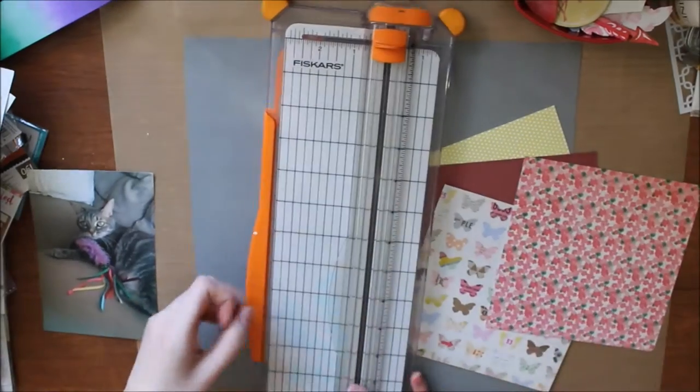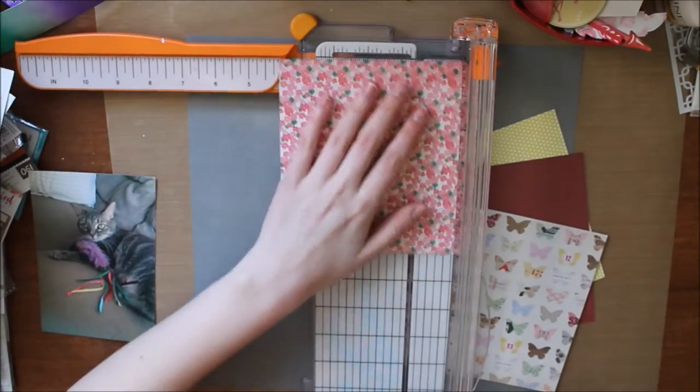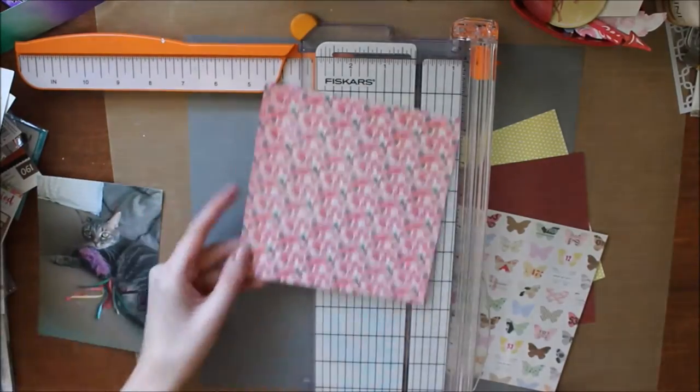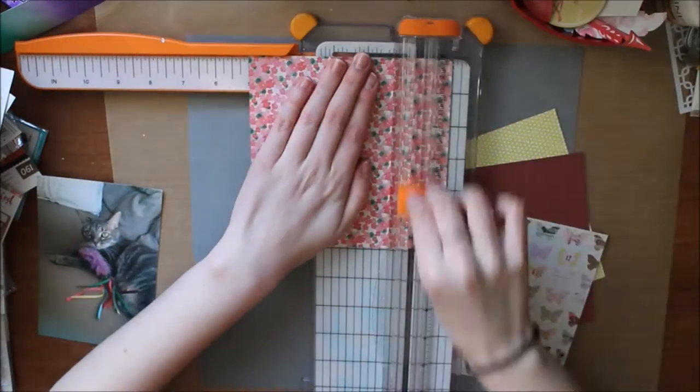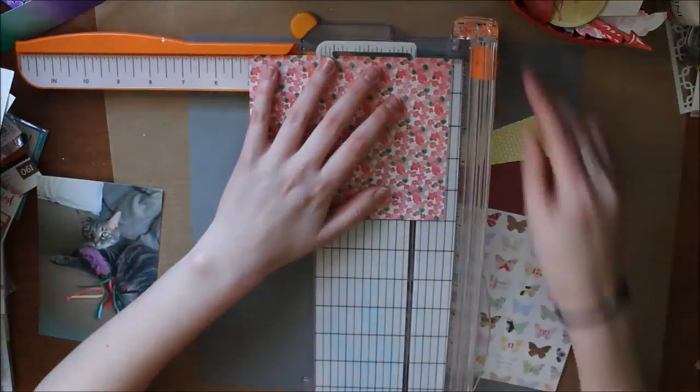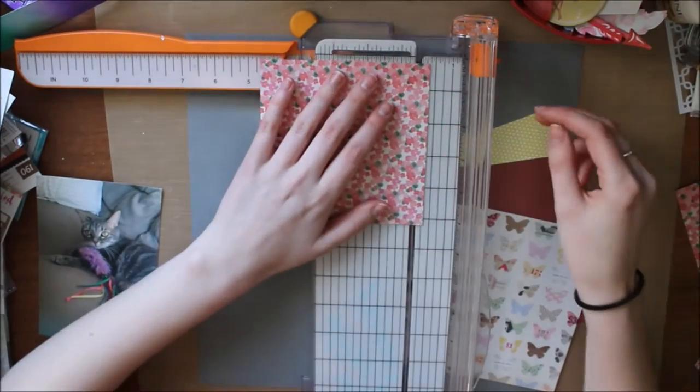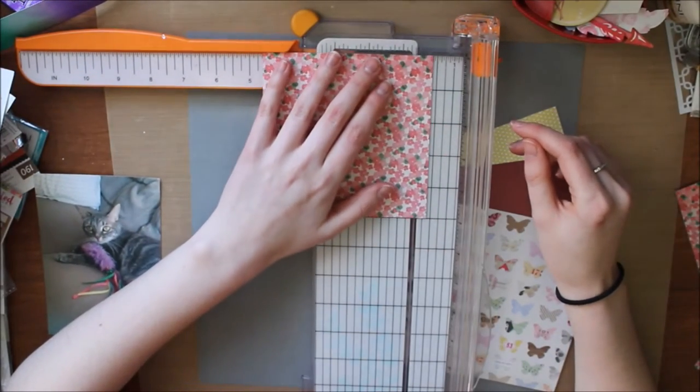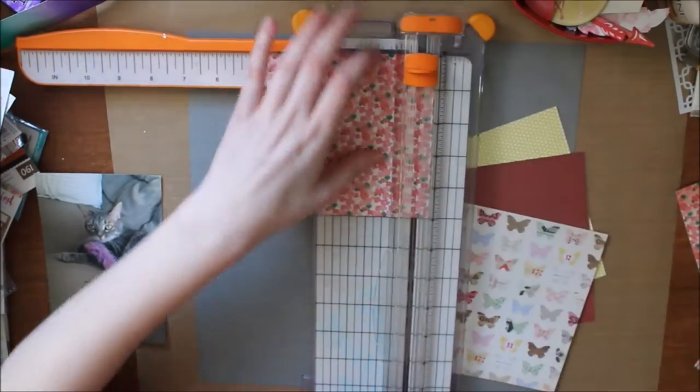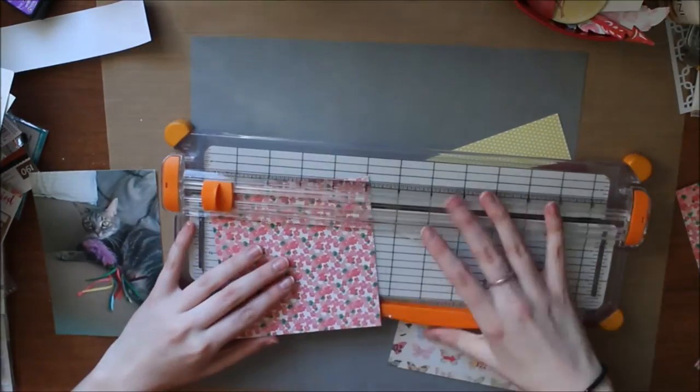So first step is gather 6x6 papers. Once you see the design you'll be able to figure out how many you want to do because you can expand more than four like I'm doing right here. I'm going to cut all of these down to 5x5. Now you can leave them 6x6 but once you see why you'll see why I cut them down because that's the look I was going for.